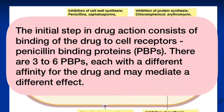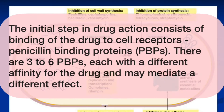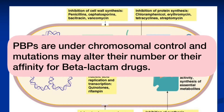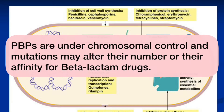The initial step in drug action consists of binding of the drug to cell receptors, which are the penicillin binding proteins. There are three to six penicillin binding proteins, each with a different affinity for the drug, and may mediate a different effect. Penicillin binding proteins are under chromosomal control, and mutations may alter their number or their affinity for beta-lactam drugs.